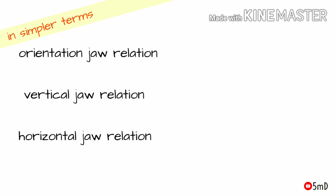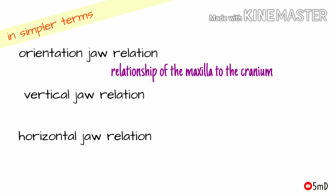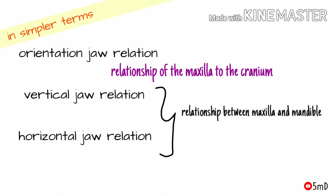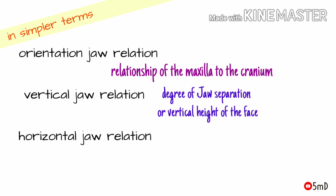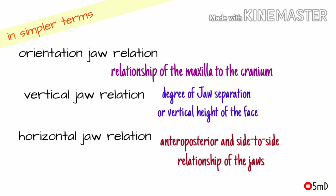First is the orientation jaw relation, second is the vertical jaw relation, and third is the horizontal jaw relation. Orientation jaw relation is the relationship of the upper jaw maxilla to the skull or cranium. Vertical jaw relation and horizontal jaw relation denote the relationship between the two jaws — maxilla and mandible. In vertical jaw relation, we get to know the degree of separation between maxilla and mandible, or the height of the face.